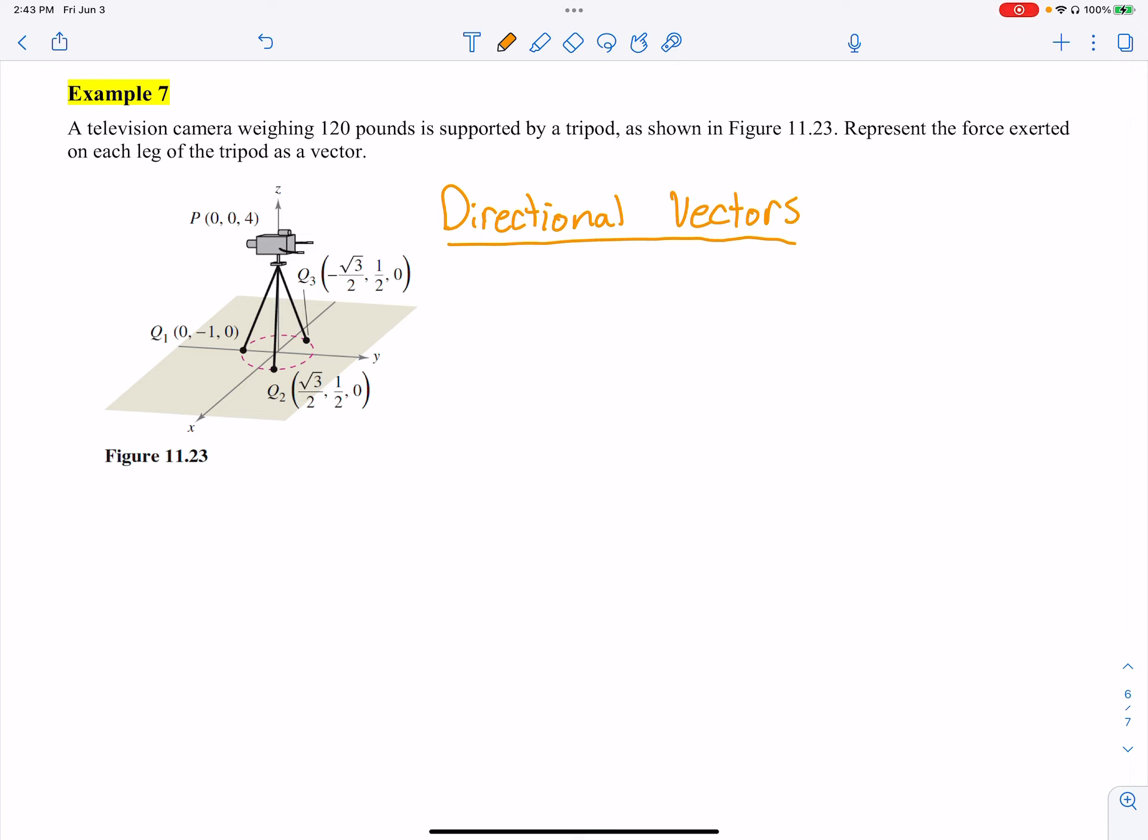So the first directional thing I'm going to do is going down P to Q1. Thankfully, this is nice and straightforward because it's a lot of zeros. So 0 minus 0 is 0, negative 1 minus 0 is negative 1, and 0 minus 4 is negative 4.